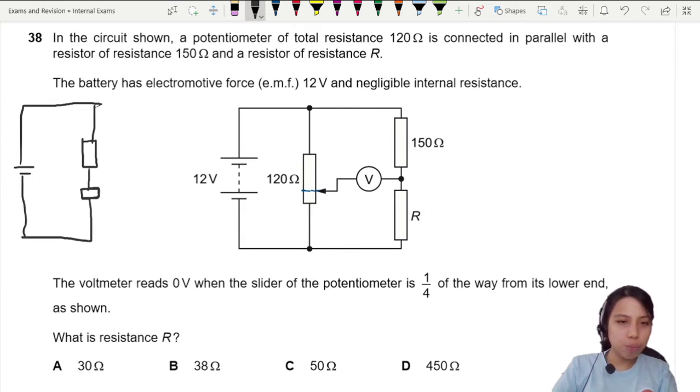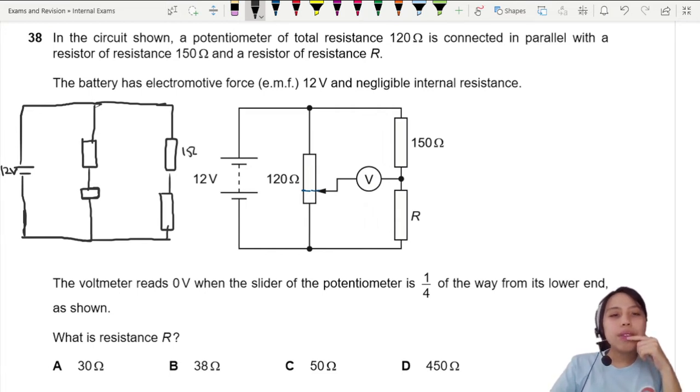So there's two resistors which were previously joined together. Then on the other side, we have the other components. Alright, we got 12 volts. We know this is 150 ohm. We don't know what is this R.